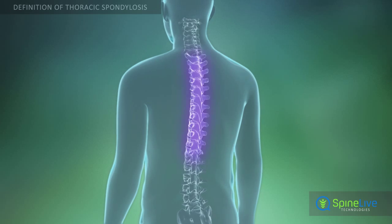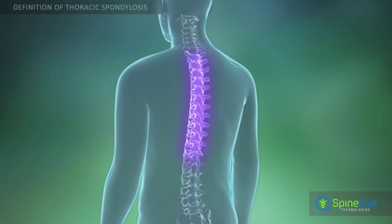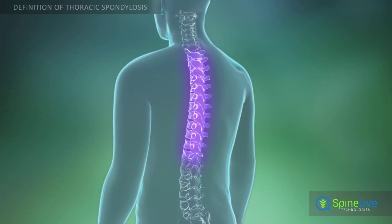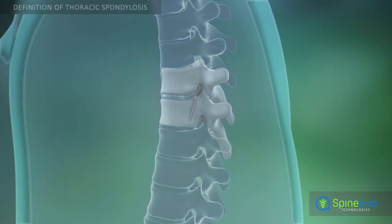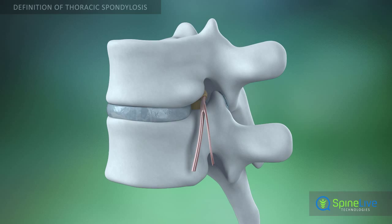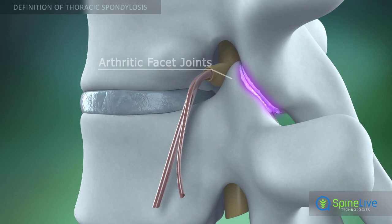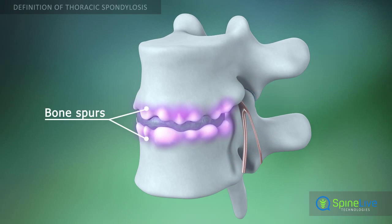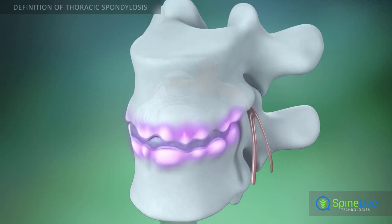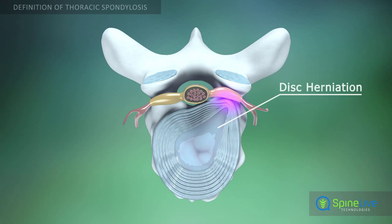Thoracic spondylosis is a degenerative condition of the thoracic region of the spine. This pathological condition can include facet joint osteoarthritis, formation of bone spurs, or disc herniation.